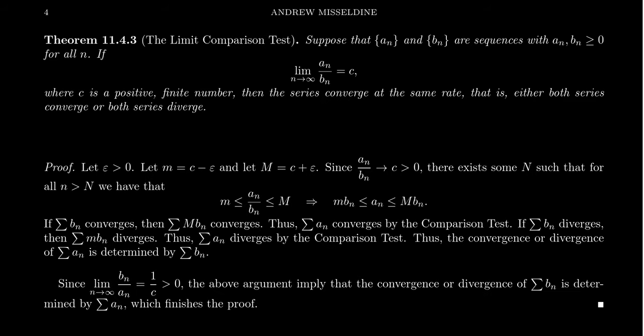The limit comparison test works around the inequality limitation and uses a limit calculation to determine the asymptotic behavior of sequences, and from that determines the convergence of the associated series. We have two sequences, a and b, and the only requirement is that they're both positive sequences — they never obtain negative values. This just has to be eventually true for this to work.